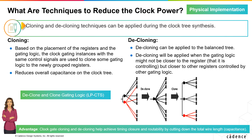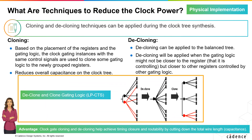You can further reduce the clock power by using cloning techniques during clock tree synthesis. Once clock gating logic has been inserted, you might decide to merge or clone clock gating within the same clock domain that is enabled by the same set of enable signals, to later create a balanced clock tree and improve the clock skew using a clock tree synthesis tool.